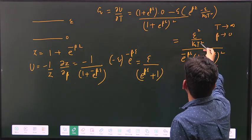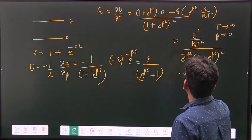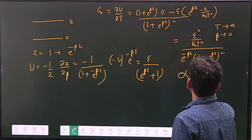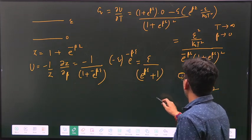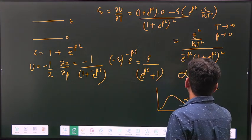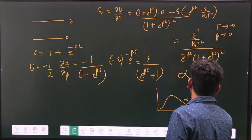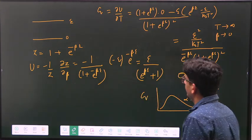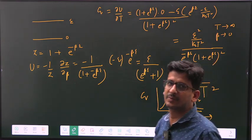But when temperature becomes large, the Cv will go by 1 by T square. So it will be in that range going like 1/T^2 in the higher temperature range, and this is the Cv. So this was the question, thank you so much.